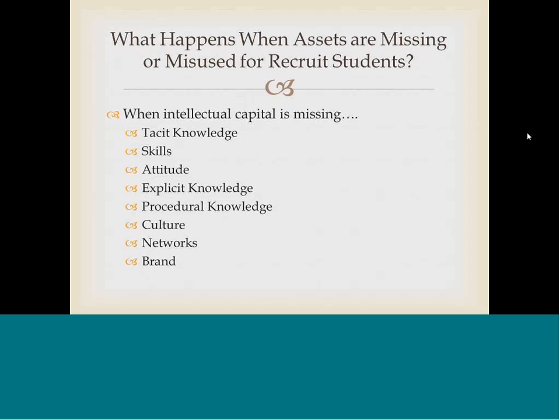What happens when assets are missing, misused, or mismanaged in the recruit students category? I would consider which is the most important intellectual capital asset when looking at recruiting students. I would say that the nature of culture, attitude, and the value of networks are probably the most important intellectual capital assets for this capability, simply because students are looking at the university in terms of its culture and attitude, and we're looking for students whose cultures and attitudes align with and support those of the university.